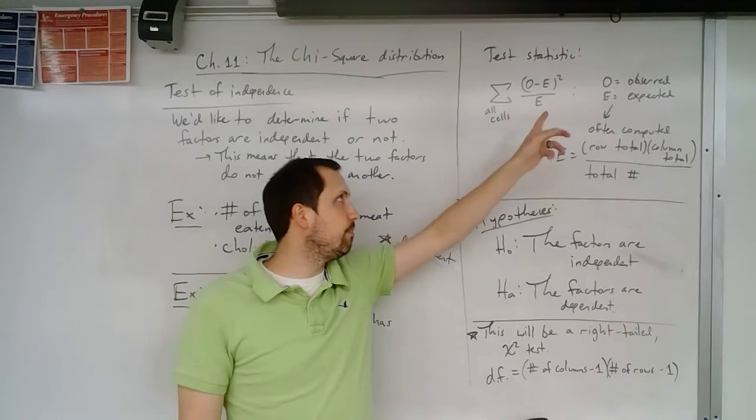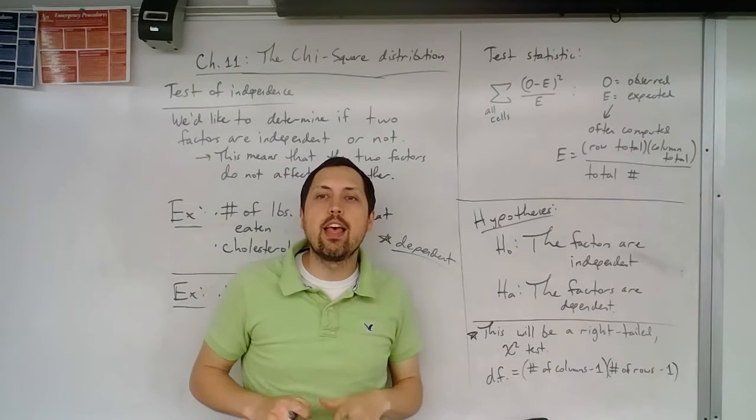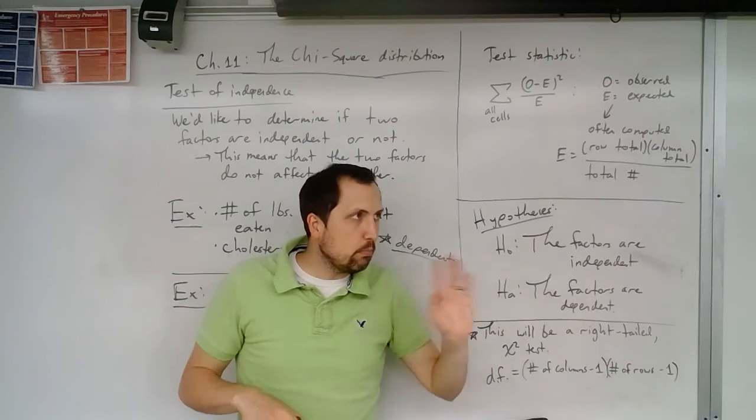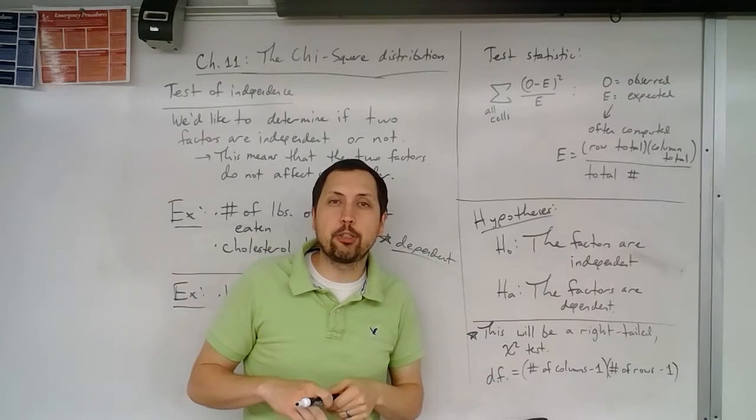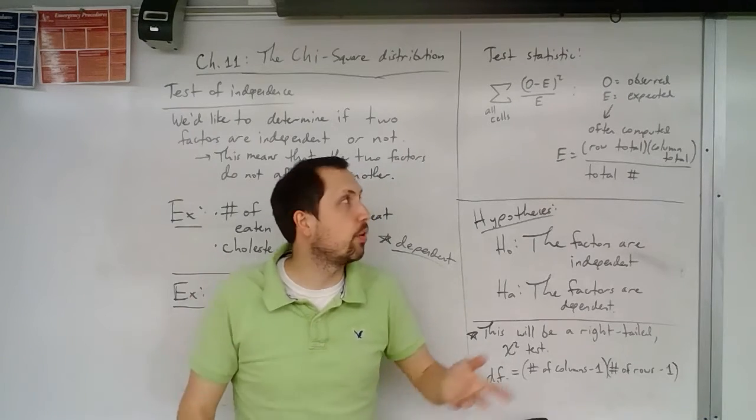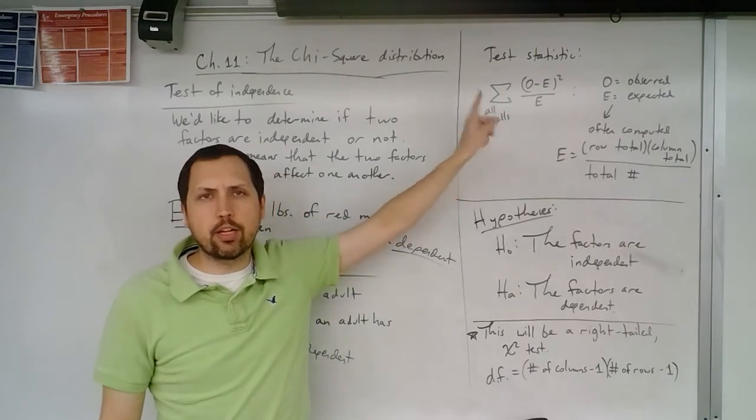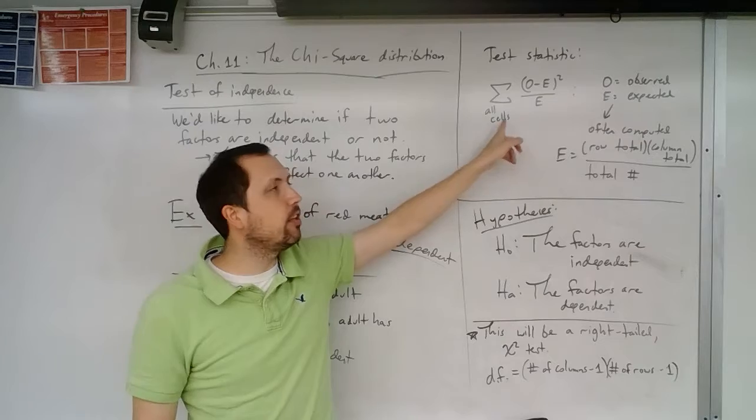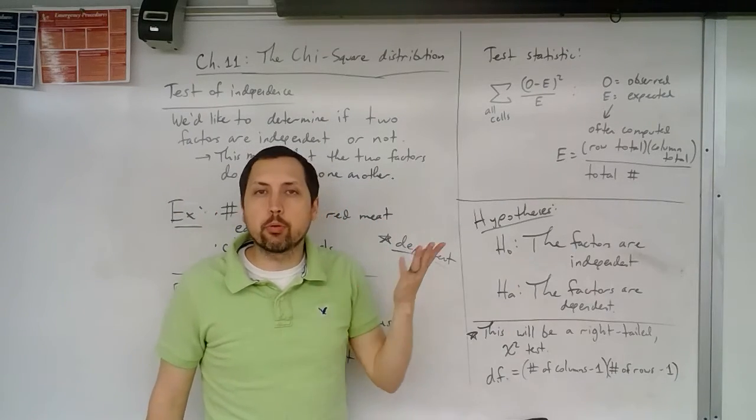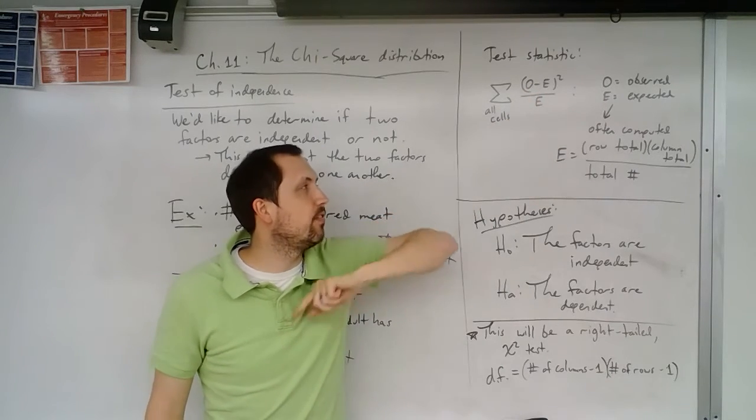So the test statistic, it's going to be written like this. So this is a different style of test statistic. At this point, the test statistics that we did back with the normal distributions and T distributions, all of those are related to Z scores. Or I guess T scores, which are like Z scores. But this is going to be very different. Here we're going to add up the sum. The sigma notation means we take the sum. We're going to add up all of these what are called cells. We'll see an example with some word problems where we'll see this. But we're going to take the observed minus the expected, we're going to square that and divide that by E.